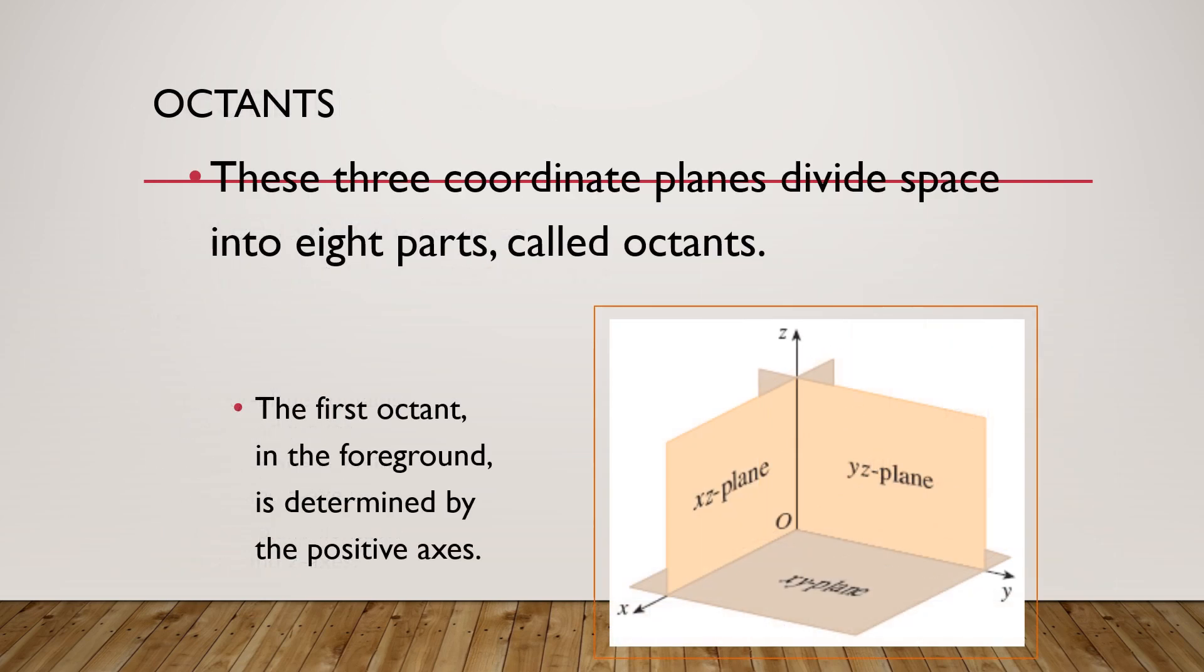When the intercepting axes divide the space into planes, we got eight parts, that is called octants. The space we are shown in the figure, that is the first part of the octant or the foreground.